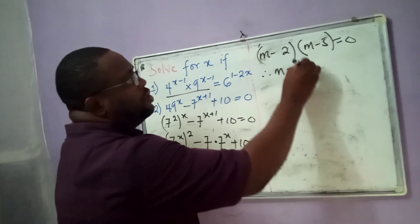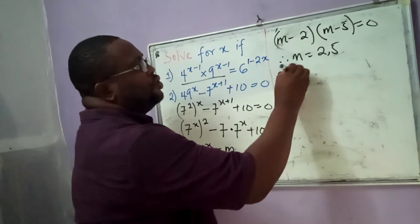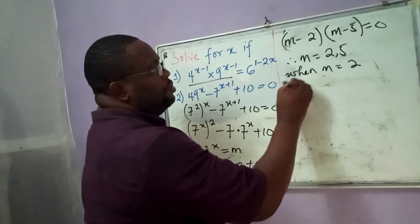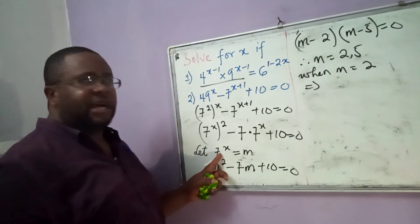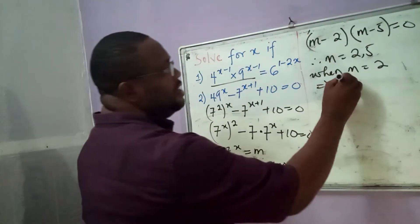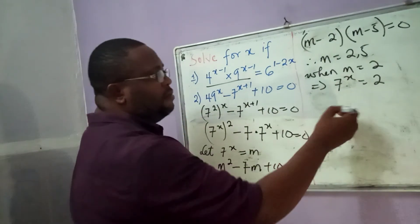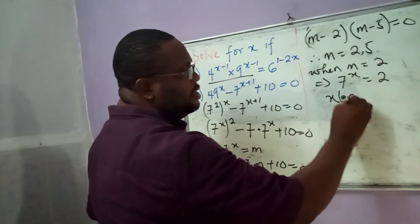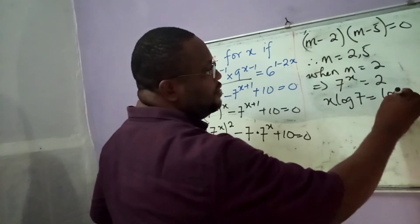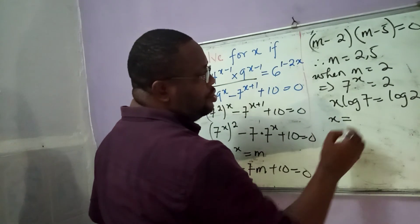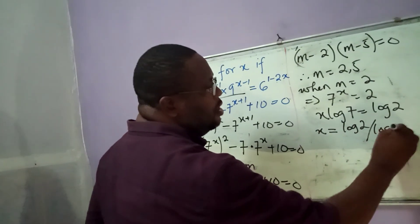Therefore, it simply means that m is equal to 2 and 5. Now, what happens when m is equal to 2? This implies — remember that m was taken to be 7 to the power of x — so we now have 7 to the power of x is equal to 2. We take logarithm of both sides. Therefore, we have x logarithm of 7 is equal to logarithm of 2, and therefore x is equal to logarithm of 2 divided by logarithm of 7.